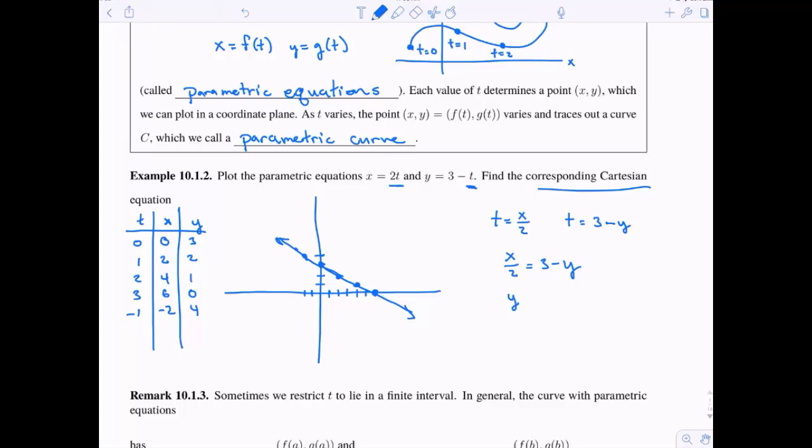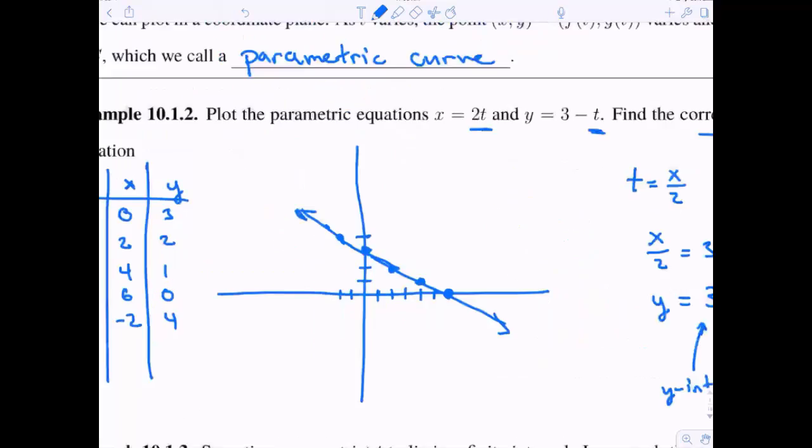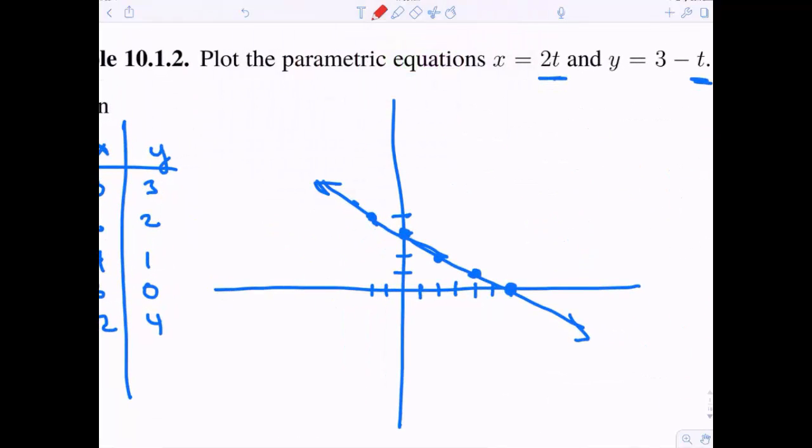So since these are both equal to t, by the transitive property of equality, they must be equal to each other. And therefore, I can rearrange this to solve for y. y equals 3 minus x over 2. And we can see we have a y-intercept, and we have a slope. So y-intercept is 3, our slope is negative 1 half.